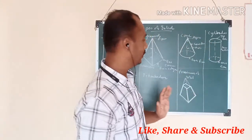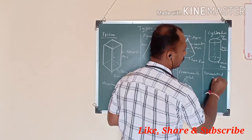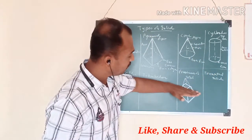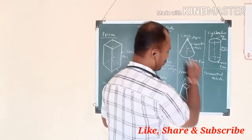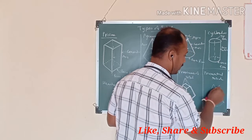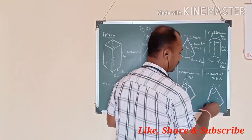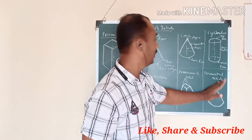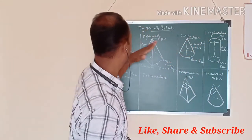One more solid is the truncated solid. The difference between frustum and truncated solid is: in frustum, the cutting plane is parallel to the base; in truncated solid, the cutting plane is inclined to the base. All solids can have a truncated form because any solid can be cut with a plane inclined to its base.